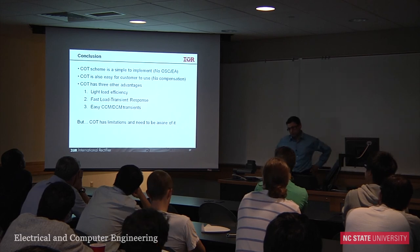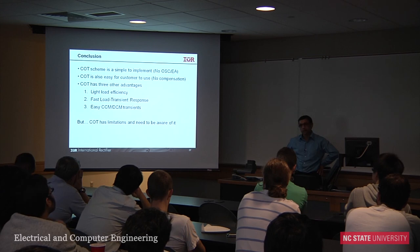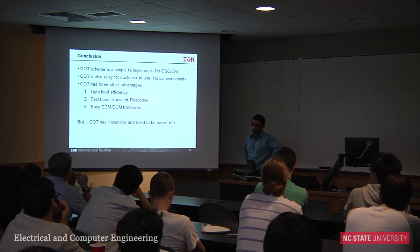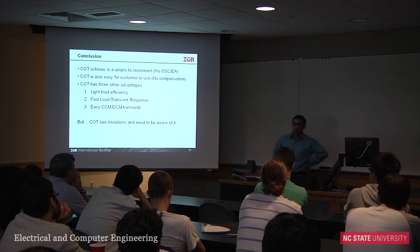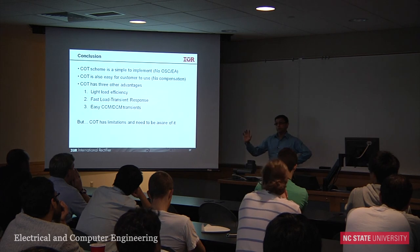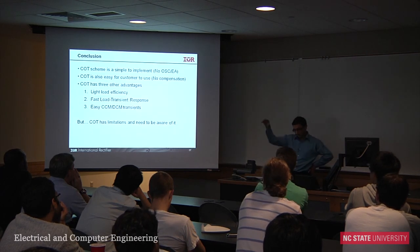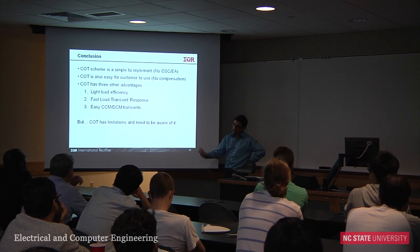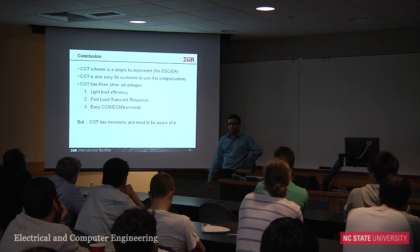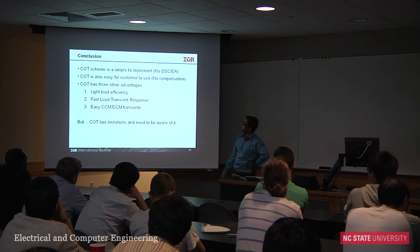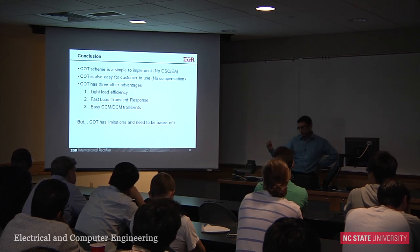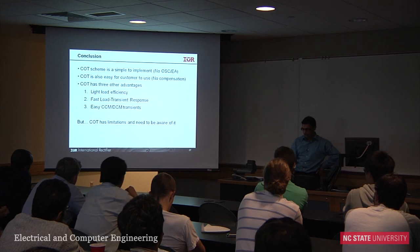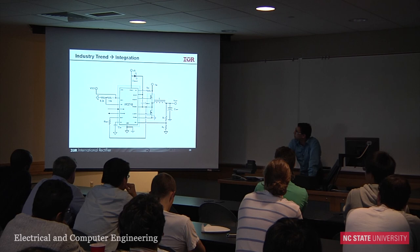The takeaways for constant on-time: it's simple — no oscillator, no error amplifier. It's easy for customers with no compensation loop design required. We're even thinking about simplifying the product further so a customer just provides an enable signal and everything else is automatic. The three other advantages are light load efficiency, fast transient response, and easy CCM-to-DCM transition. Just be aware of the limitations.